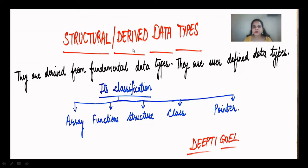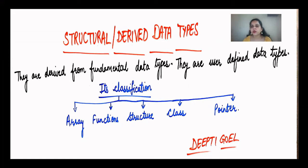Next are the structural or derived data types. These are derived from the fundamental data types we already studied — they are user-defined data types. Just as velocity is derived from length divided by time in physics, similarly in C++ the user derives new types from fundamental ones. The classifications include: array, function, structure, and pointer. We shall study these in the next modules.